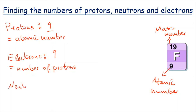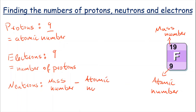For the neutrons, remember we take the mass number and take away the atomic number. Here we have 19 take away 9, which means we have 10 neutrons in a fluorine atom.